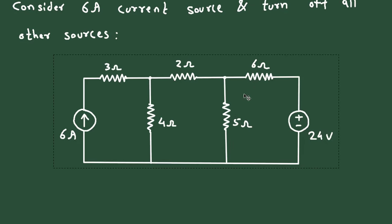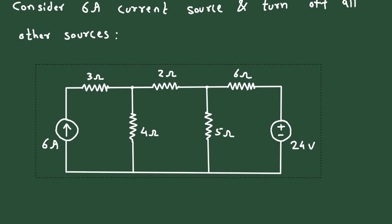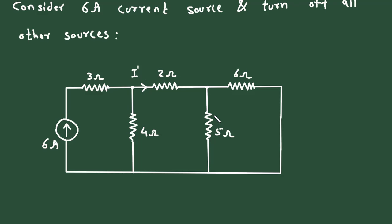Now here we can see, when we consider this 6 ampere current source, that time this voltage source will be turned off. And when we turn off a voltage source, that time it will be a short circuit. Now here, let's consider this current as I prime.